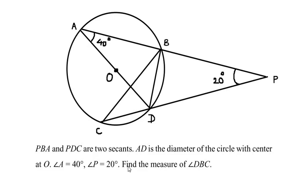Hello and welcome to my channel. In this video we are going to solve an example on circle theorems. Line PBA and PDC are the two secants, AD is the diameter of the circle with center at point O. Angle A is 40 degrees and angle P is 20 degrees. Find the measure of angle DBC, which is this small angle.